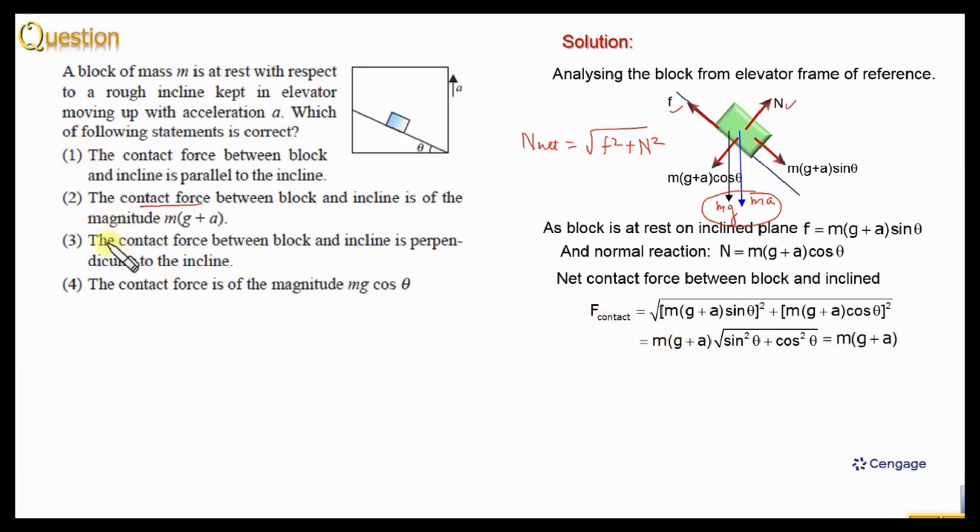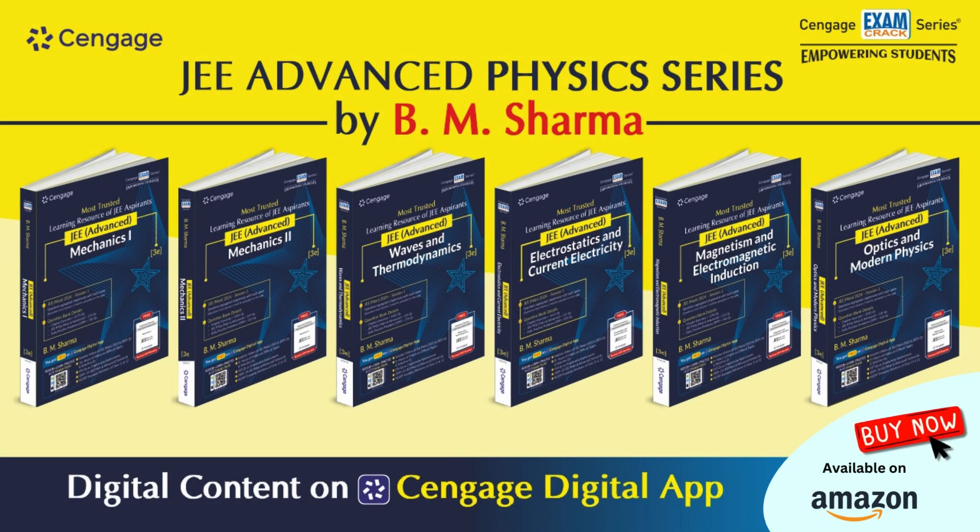Now we can find the option. Second option should be correct, right, because it is given the contact between the block and inclined is having magnitude mg plus a. So this is the correct option. So this is the right option.